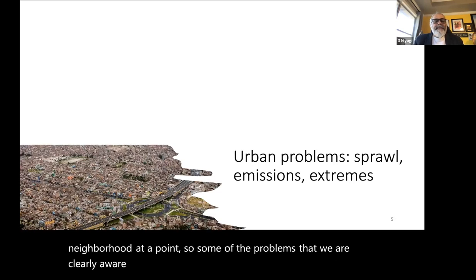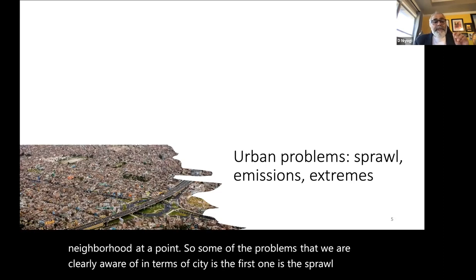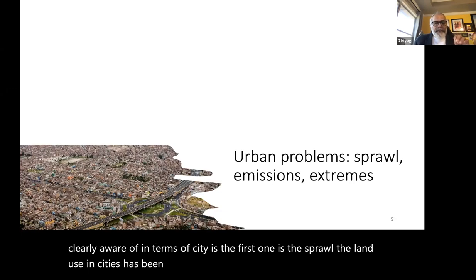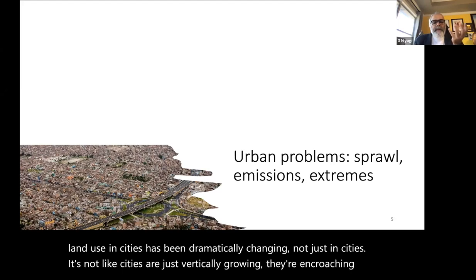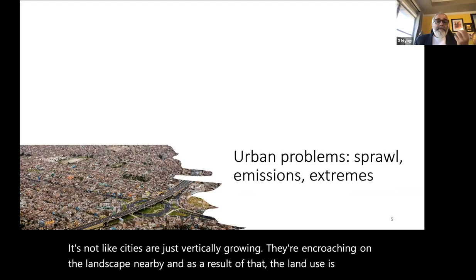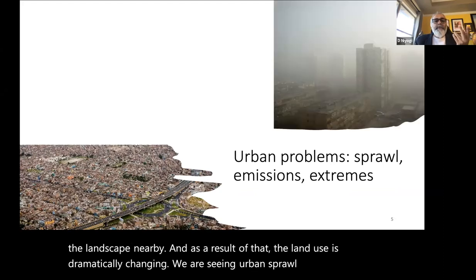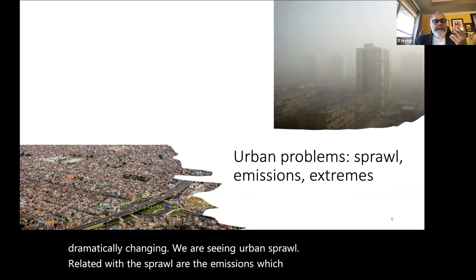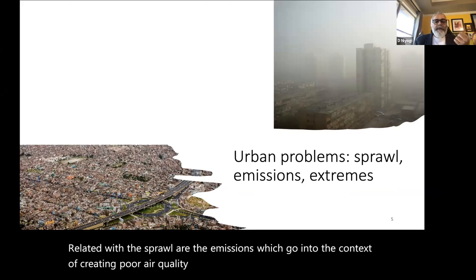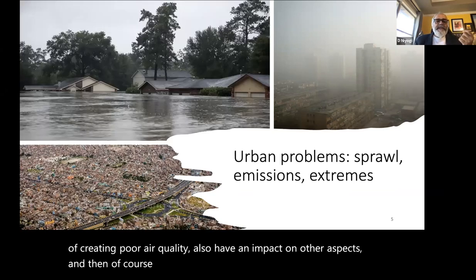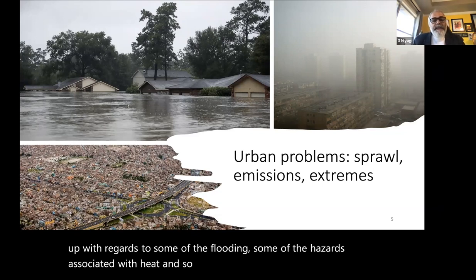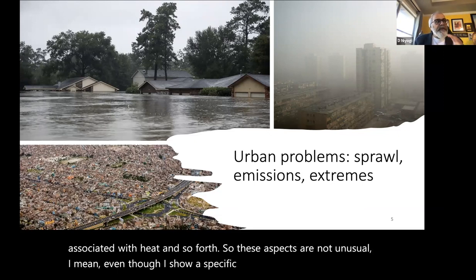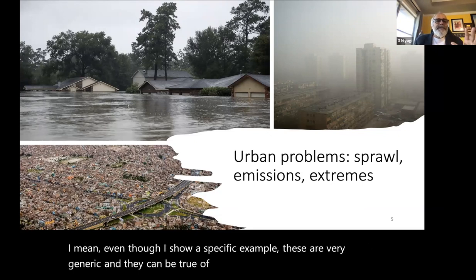Some of the problems clearly associated with cities: first is sprawl — land use has been dramatically changing as cities encroach on nearby landscapes. Related to sprawl are emissions creating poor air quality and health impacts, and then a cascade of extremes including flooding and heat hazards. These are not unusual; they are generic and true of almost all major cities.